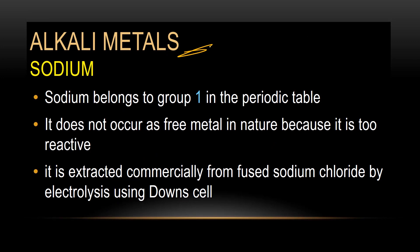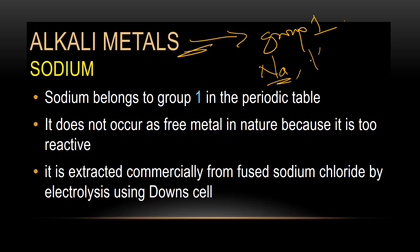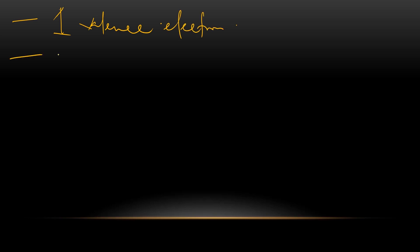Now let's talk about alkali metals first. What are alkali metals? The metals which are called alkali metals are Group 1 elements. They belong to Group 1. Examples: we have sodium, potassium, lithium. The most reactive is potassium. Group 1 elements have one valence electron in their outermost shell. Group 1 elements are very reactive.